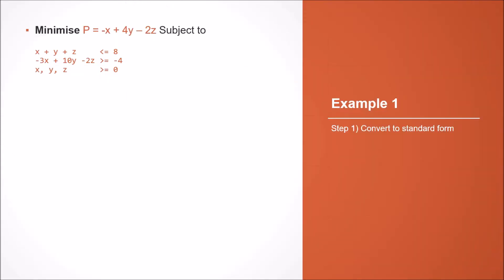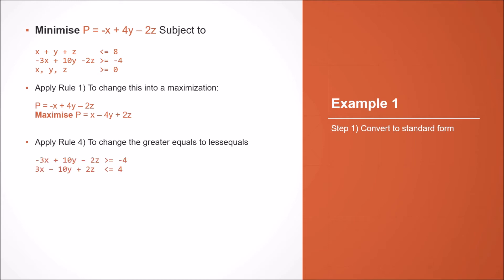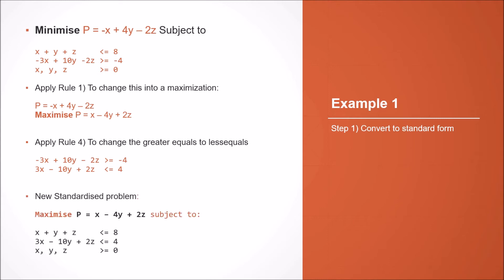We're now going to run through a quick example to illustrate the problem in more detail. This is a minimisation problem, so we have to start by converting it into standard form. The first step is to apply rule 1 to convert this into a maximisation by negating all of the coefficients in the objective function, and then apply rule 4 to convert the greater-equals constraint into a less-equals constraint. We now have the problem in standard form.